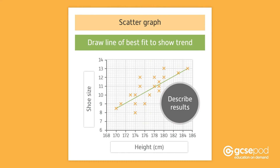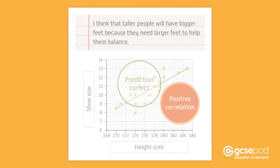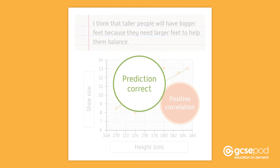The final stage of the investigation is to describe what your results show and link this to your prediction. In the case of height and shoe size, you can see that there is a positive correlation between height and shoe size. The prediction was correct — as the height of the student increases, the shoe size also increases.